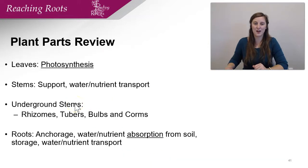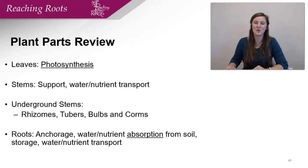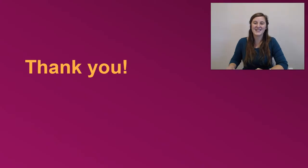Let's review what we've covered for plant parts so far. In the first lecture, we covered leaves and stems. In this lecture, we covered underground stems, including rhizomes, tubers, bulbs, and corms. Next time, we're going to talk about roots and how they're important for anchoring the plant, water and nutrient absorption from the soil, and storage and nutrient transport. Until next time, I hope that you have a great day, and if you have any questions feel free to comment or email me. Bye-bye!